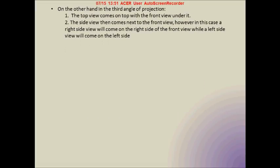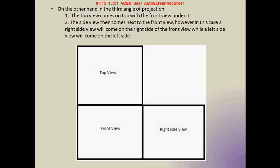The second kind of arrangement is called the third angle of projection. In it, the top view comes on top rather than the front view, and the front view comes under the top view. The side view again comes on the left or right of the front view, but this time a left side view will come on the left side and a right side view will come on the right side — unlike the first angle. And again, this picture should make things a little bit clearer.